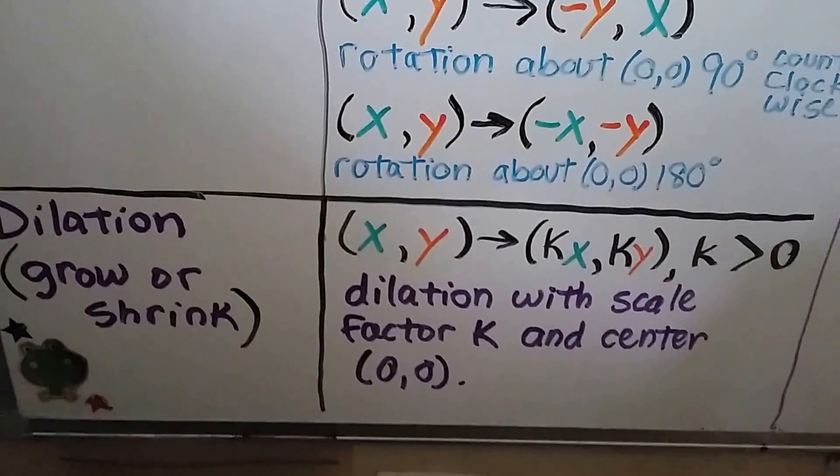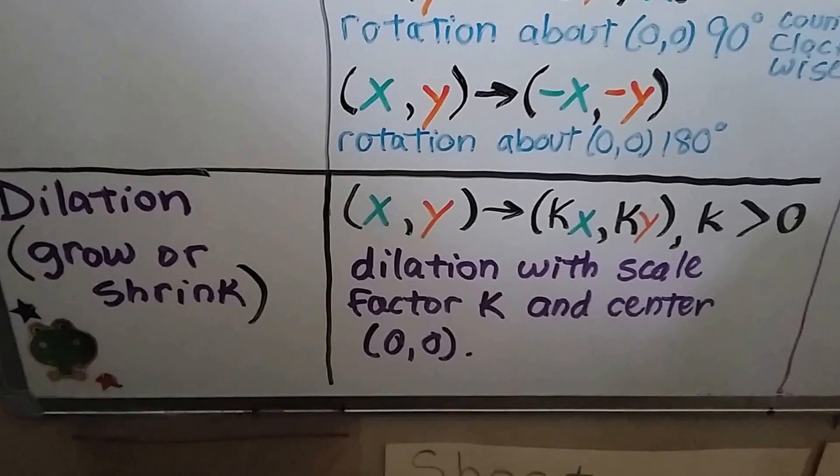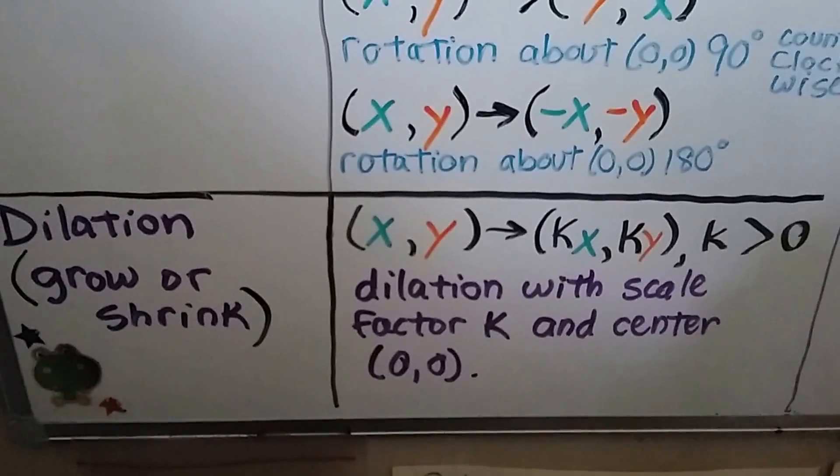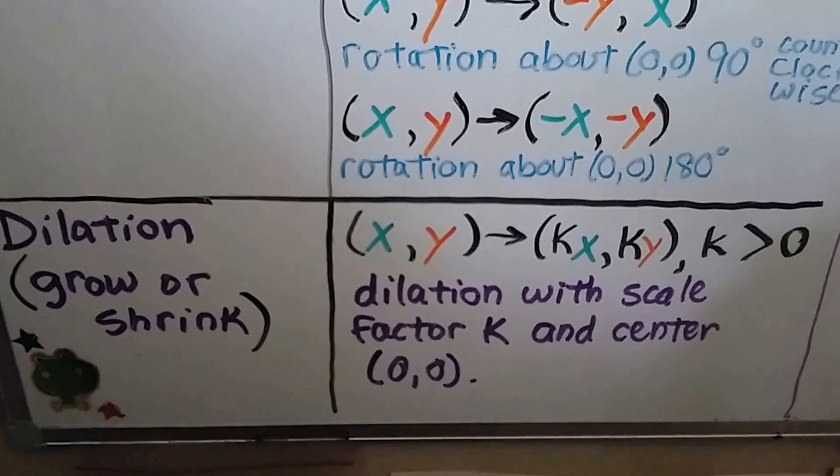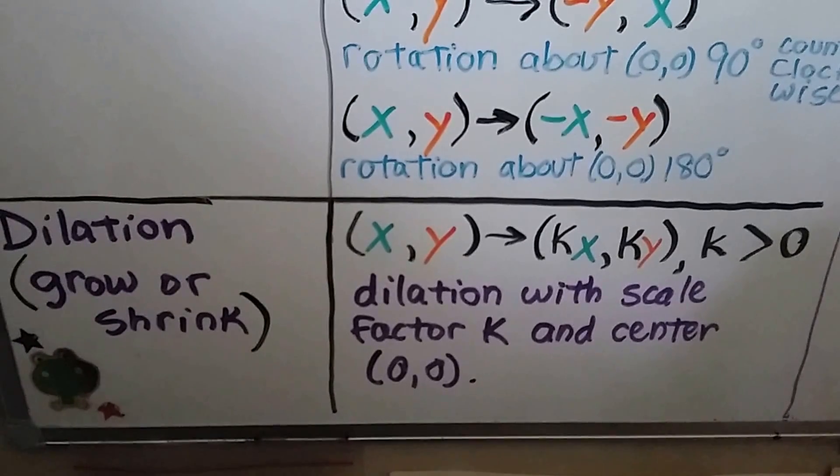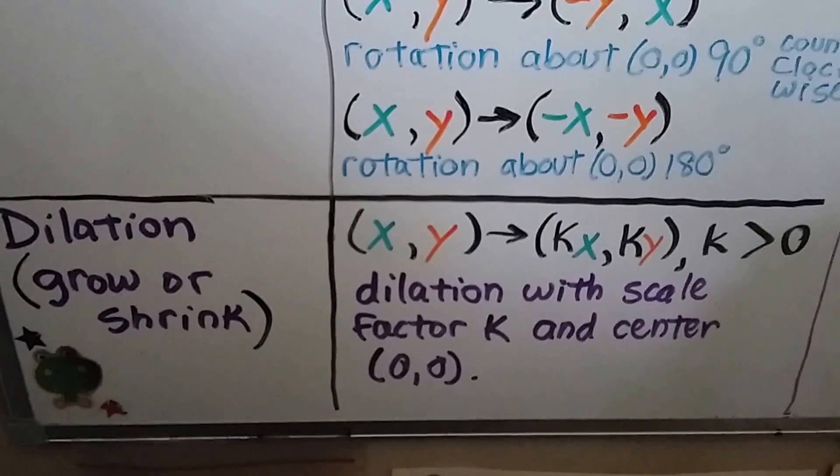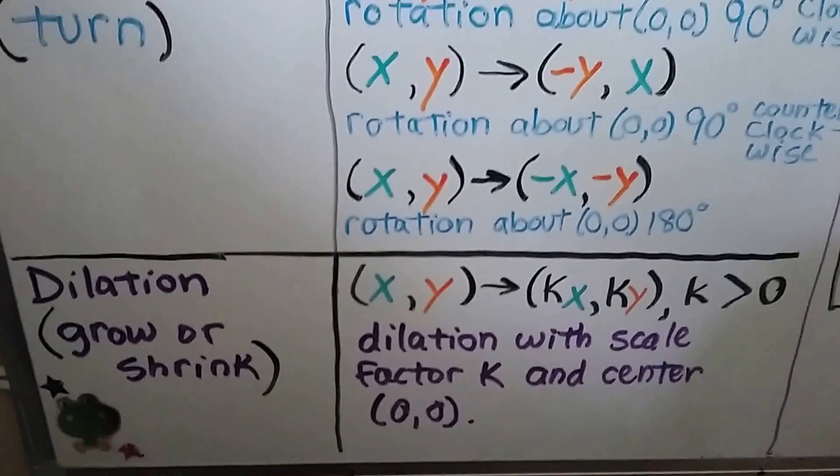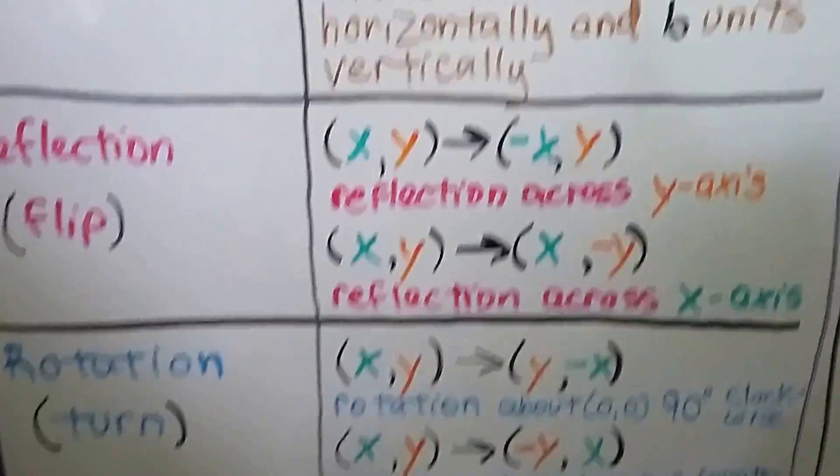Then we have dilations. That's growing or shrinking of the figure. Our x, y would map to kx, ky, and k is larger than 0. It's greater than 0. And dilation with scale factor k and center (0, 0) on that origin. If you notice the kx, ky, that's multiplication. That's the only one that has multiplication.